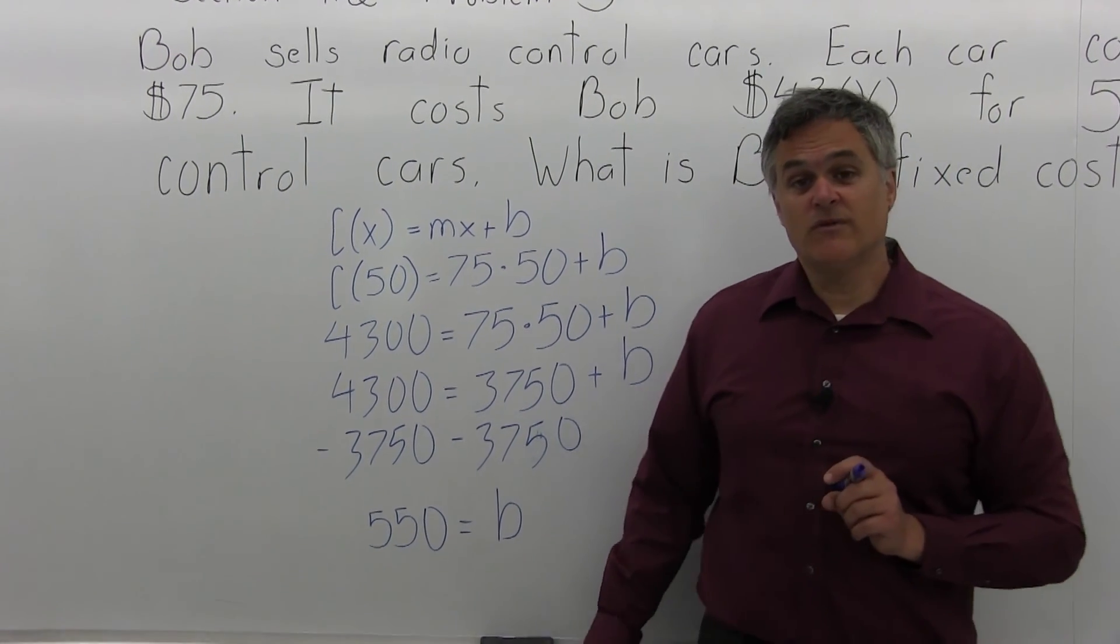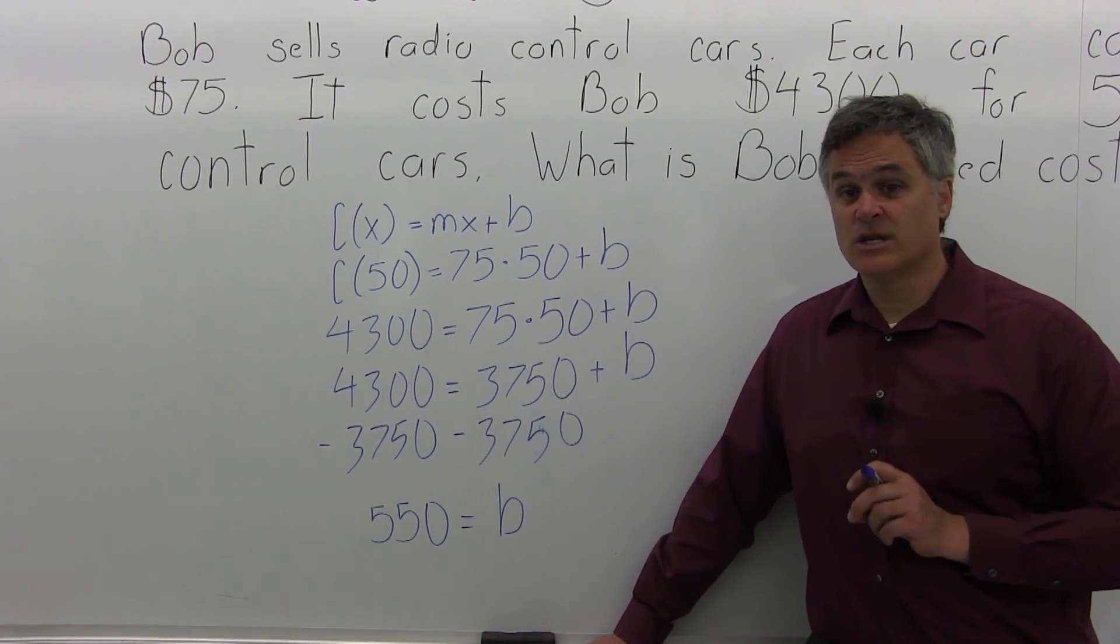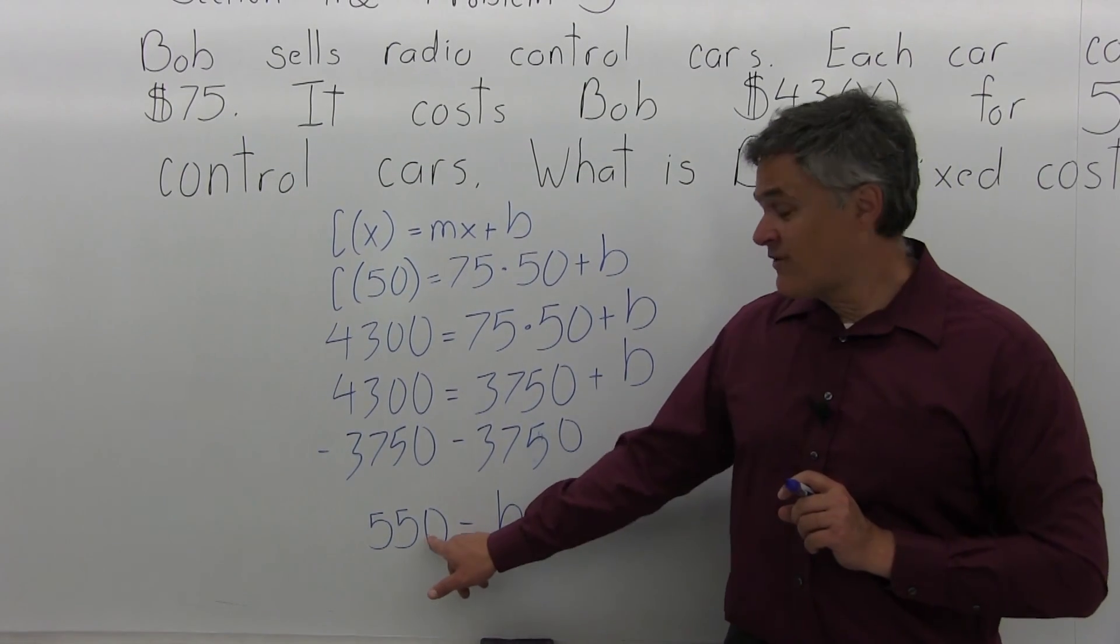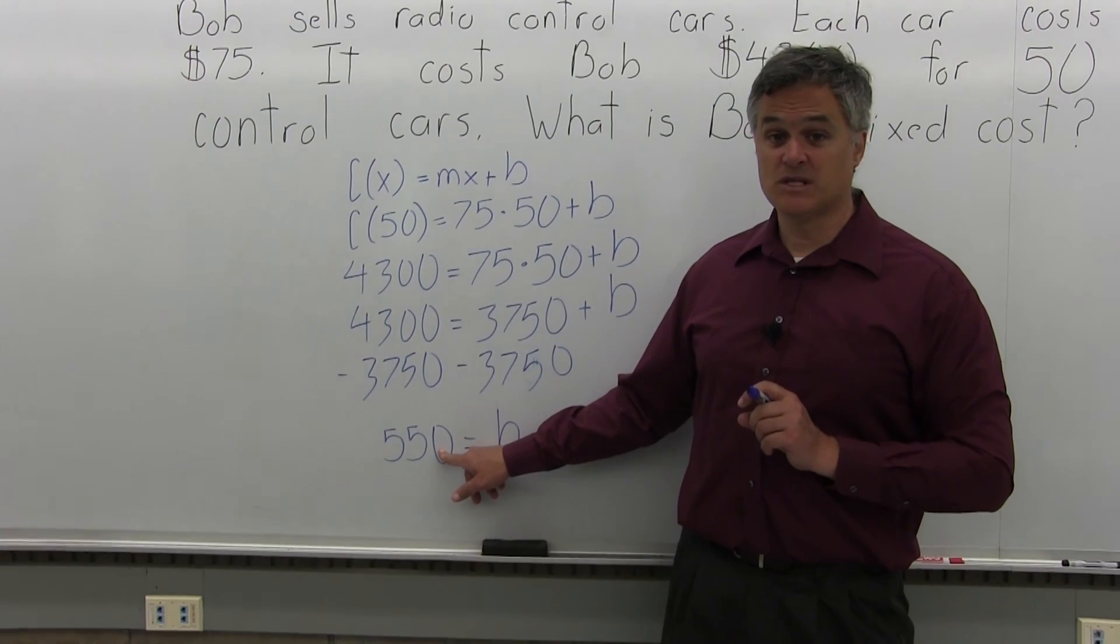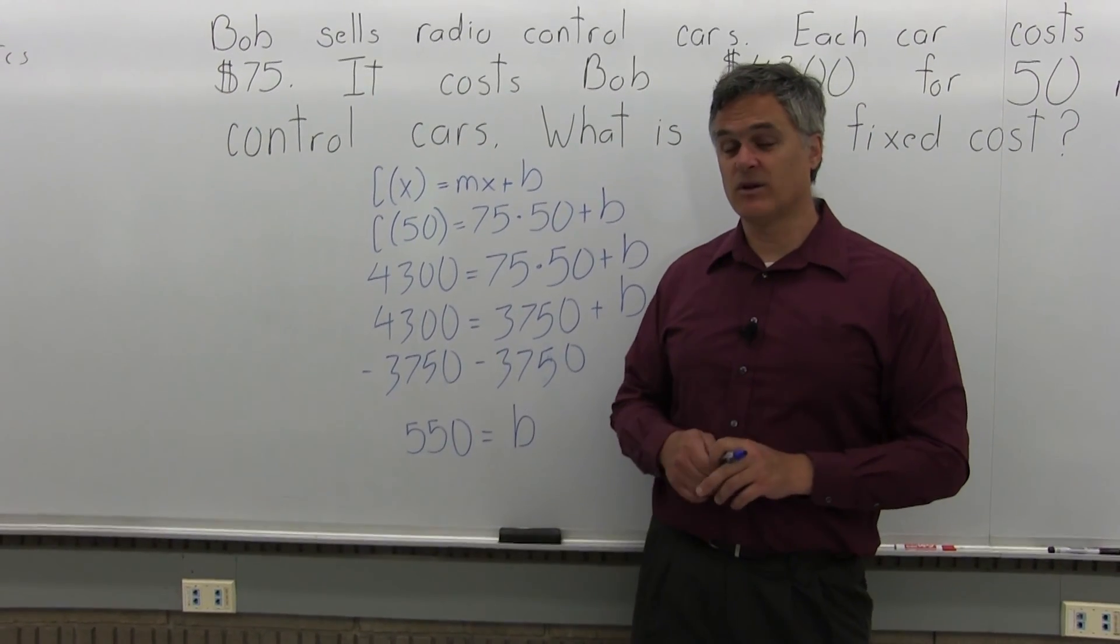So B equals 550, that'd be $550. So the fixed cost is $550. It costs Bob $550 to run his business, even if he doesn't sell any radio-controlled cars at all.